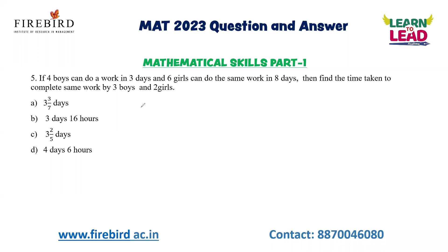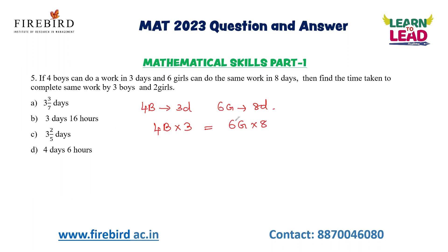This is a question based on time and work. If 4 boys can do a work in 3 days and 6 girls can do the same work in 8 days, first derive the relationship between boys and girls. Equating both: 4 boys × 3 days equals 6 girls × 8 days. Simplifying, 1 boy's capacity equals 4 girls.